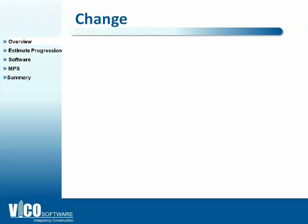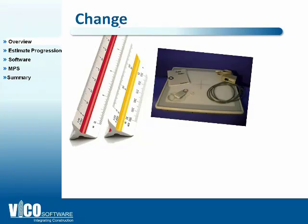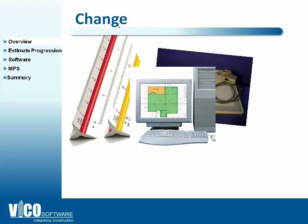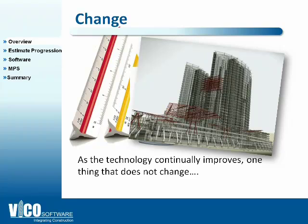Looking at the change over the years I was estimating: I used to use a scale rule at first, then we got digitizers, so gradually everything got a little bit easier. That developed into on-screen takeoff on computers, and now we can use a 3D model to generate all the quantities required for the estimate. The one common denominator that technology improves is each parameter — someone has got to bring all that useful data together and create a bid, and that will never change.